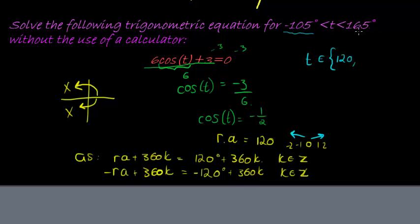So here I actually don't have a collection of solutions, I actually just have one solution that will solve this equation on this interval. So there's only one value between these two limits that will solve for cos of t equal to negative a half, and that is the angle 120 degrees.